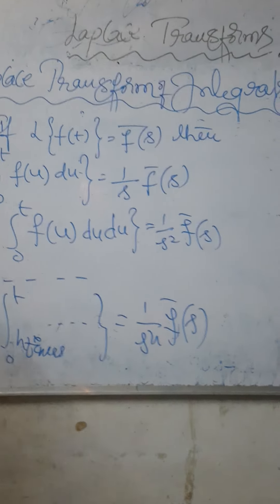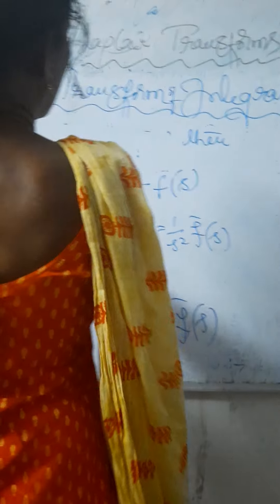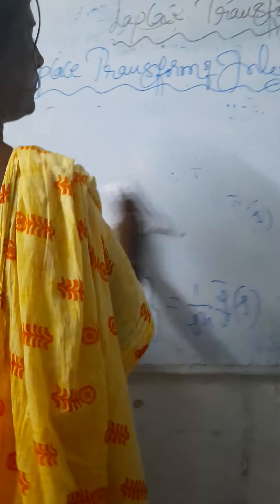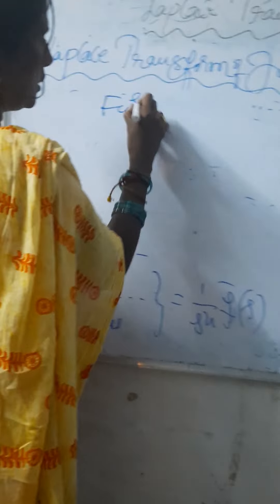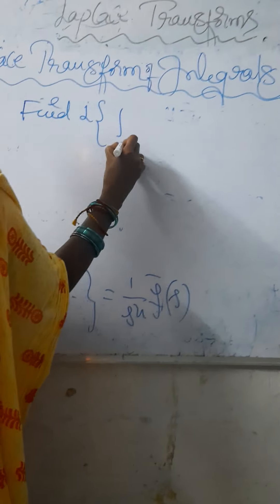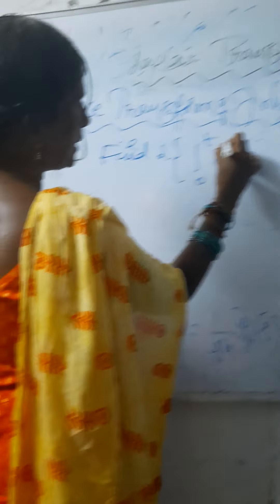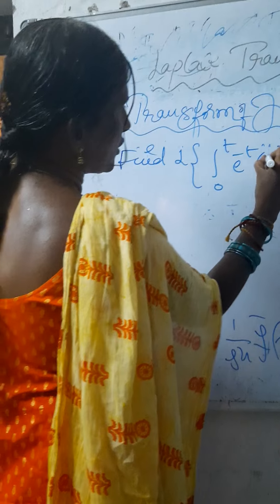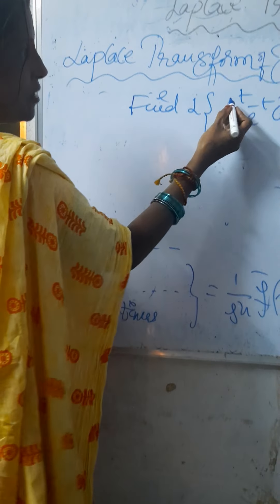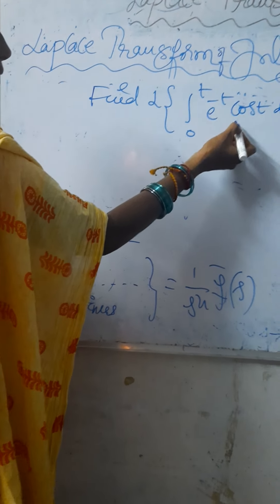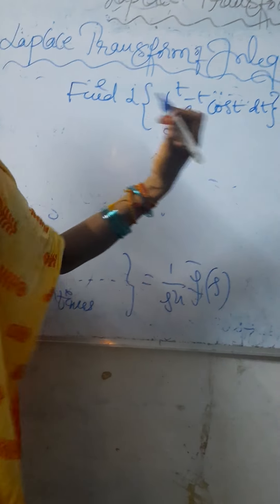Now we have to prove one example problem in the Laplace transform of integrals. Find the Laplace transform of integral of 0 to t, e to the power minus t times cos t, dt.